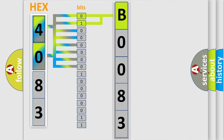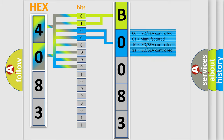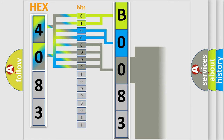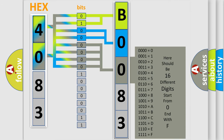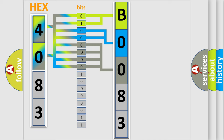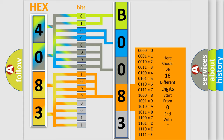The next two bits determine the second character. The last bits of the first byte define the third character of the code. The second byte is composed of a combination of eight bits. The first four bits determine the fourth character of the code, and the combination of the last four bits defines the fifth character.